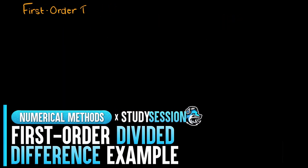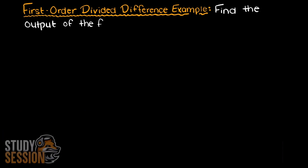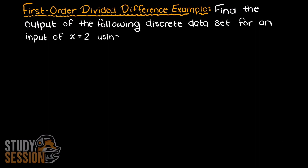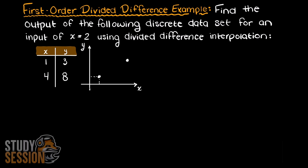In this example video we are going to be walking through a first order divided difference example. We are asked to find the output of the following discrete data set for an input of x equals 2. The first thing we need to do when solving this problem is determine what order Newton interpolating polynomial we will need to solve this problem.